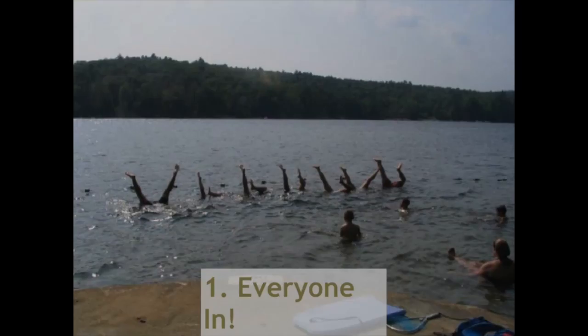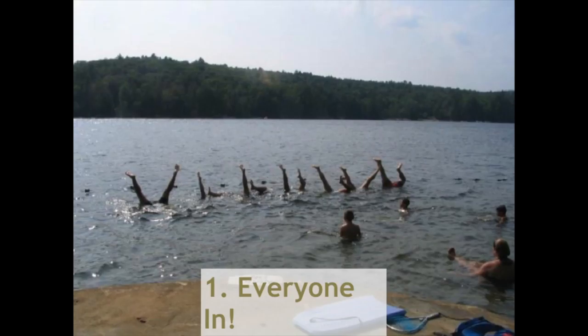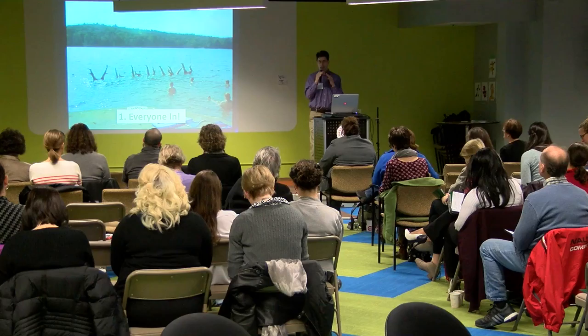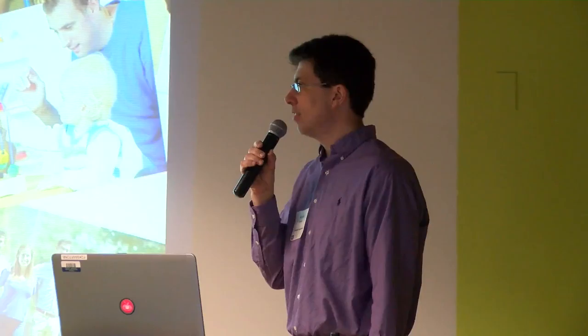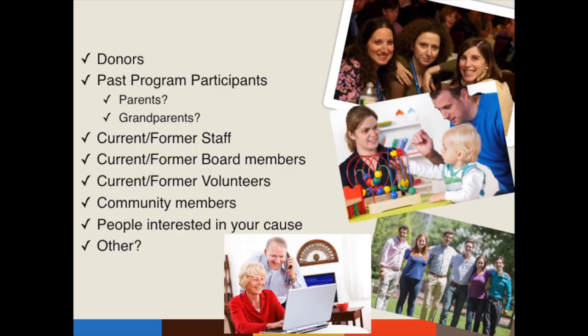Now we're going to talk about the longer term — what you're going to do to make your overall database better, and how to be ready to pull all those segments for the next Valley Gives and create even better ones. The first long-term thing: get everyone in your database. A lot of organizations only have donors in their database. I like to think of it as a communications database — put everyone in there who, if you cultivate them and connect with them, could eventually be a donor. Get all those prospects in so you can start talking to them before you actually want to ask for money.